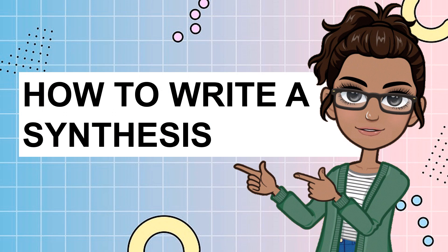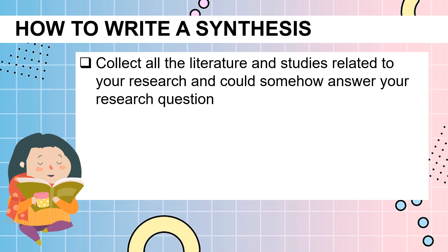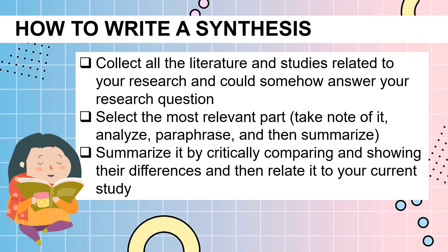Next would be how to write a synthesis. Previously, you learned what articles and sources you should select. In this part, you will be given tips on how to synthesize all the information from different sources — it is like creating a puzzle; you have to combine the right pieces to make a whole picture. Tip number 1: Collect all the literature and studies related to your research that could somehow answer your research question. Tip number 2: From each literature and study, select the most relevant part — take note of it, analyze, paraphrase, and then summarize. Tip number 3: After paraphrasing each literature and study, summarize it by critically comparing, showing their differences, and then relate it to your current study.